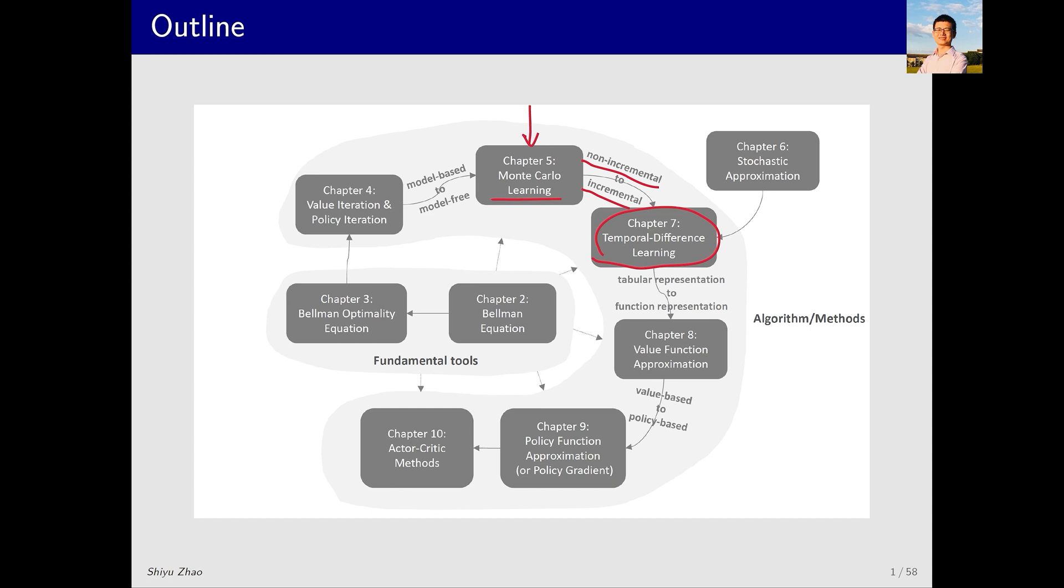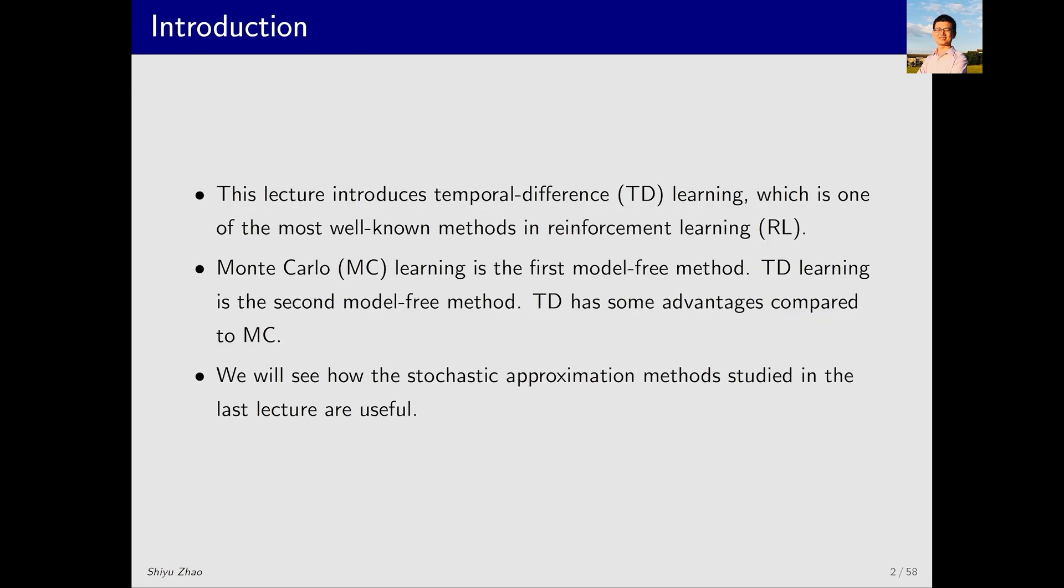In the last lecture, which was our sixth lecture, we introduced Stochastic Approximation, Stochastic Gradient Descent and the RM algorithm. The content of that lecture provides a very good foundation for this chapter. When you see the TD algorithms, you will not be surprised about their expressions, as the sixth lecture has laid the groundwork. We can also preview the next lecture, where we will introduce the Value Function method. That method will be based on the content we are about to introduce today. In particular today, we will focus on tabular representation, while the next lecture will focus on function representation.